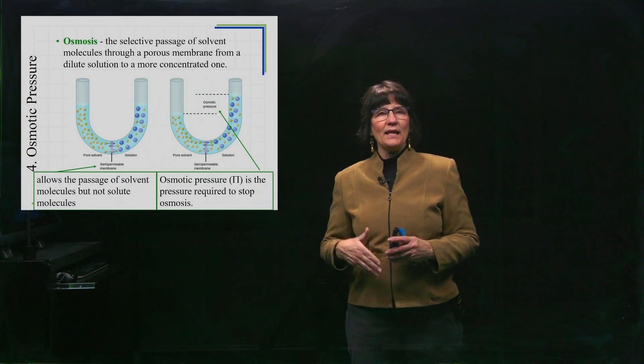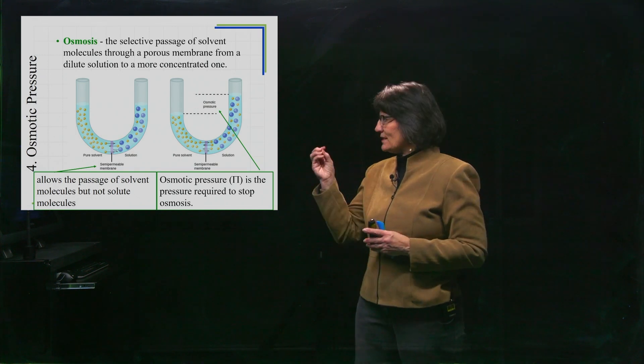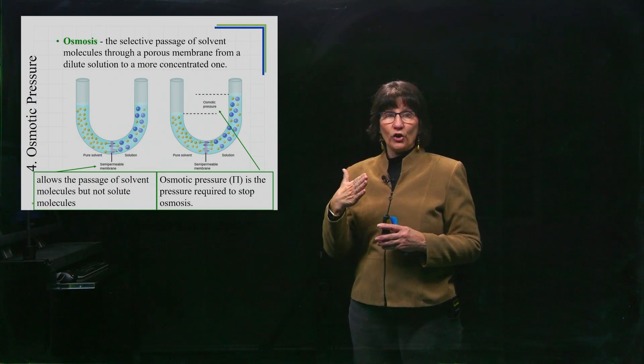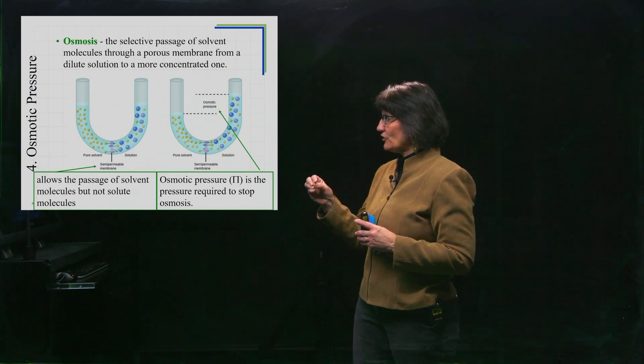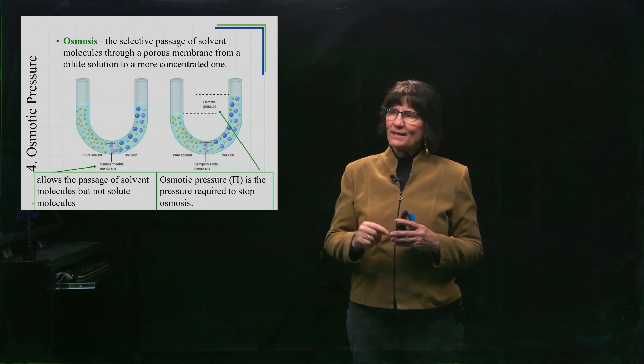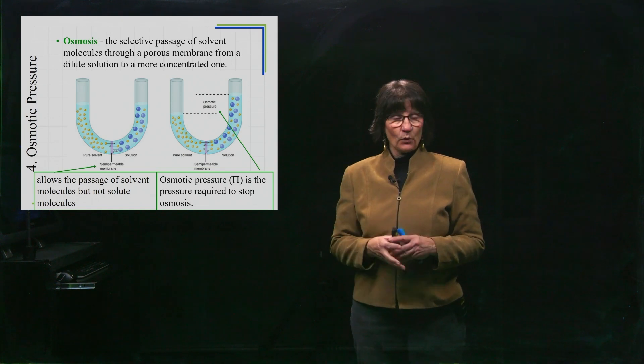So we see in this image the porous membrane right down at the bottom of that U tube. We see that we've got pure solvent on the left, we have solute and solvent on the right, and there is a net migration to the right side of this, and that's what osmotic pressure is.